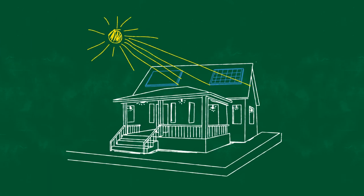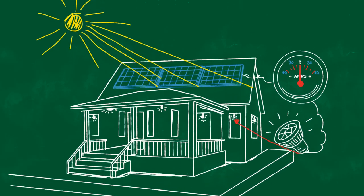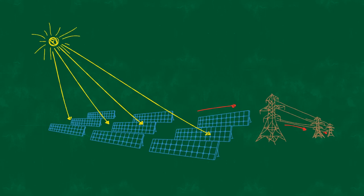Second, photovoltaic cells can be used to convert the sun's rays directly into electricity. On a small scale, photovoltaic systems are often installed on rooftops. Electricity from the sun can also be produced on a large scale by means of photovoltaic plants, which can consist of thousands of cells.